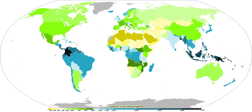The standard way of measuring rainfall or snowfall is the standard rain gauge, which can be found in 100 mm plastic and 200 mm metal varieties. The inner cylinder is filled by 25 mm of rain, with overflow flowing into the outer cylinder. Plastic gauges have markings on the inner cylinder down to 0.25 mm resolution, while metal gauges require use of a stick designed with the appropriate 0.25 mm markings. After the inner cylinder is filled, the amount inside it is discarded, then filled with the remaining rainfall in the outer cylinder until all the fluid is gone. These gauges are used in the winter by removing the funnel and inner cylinder and allowing snow and freezing rain to collect inside the outer cylinder. Some add antifreeze to their gauge so they do not have to melt the snow or ice.